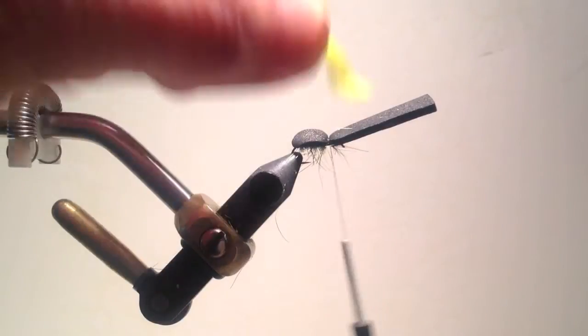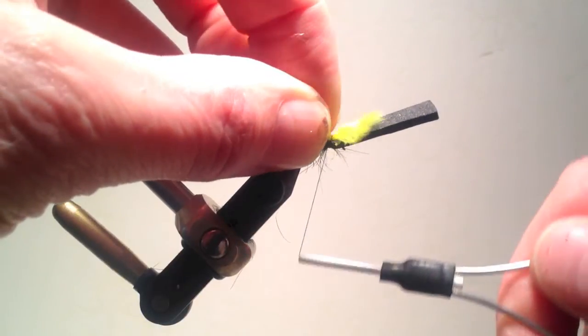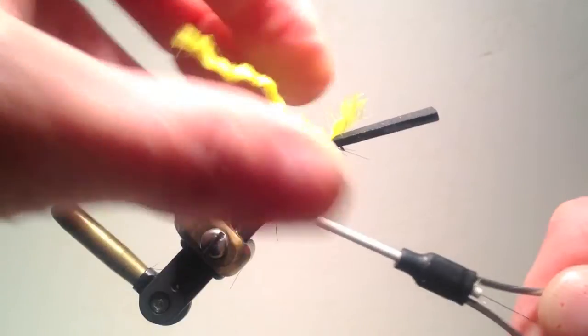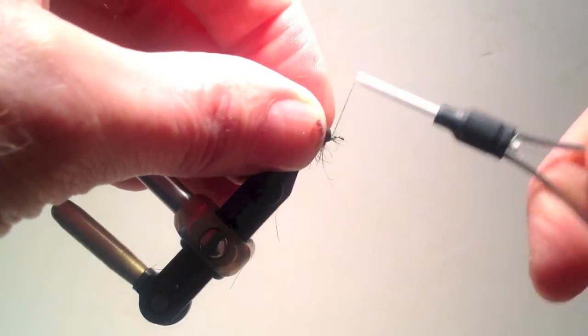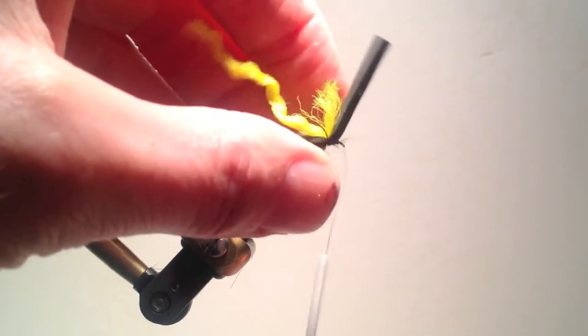I like adding yellow polypropylene yarn as an indicator, although this is optional. I bind it down to the exact same site that I bound the foam forward before tying off the thread at the eye of the hook.